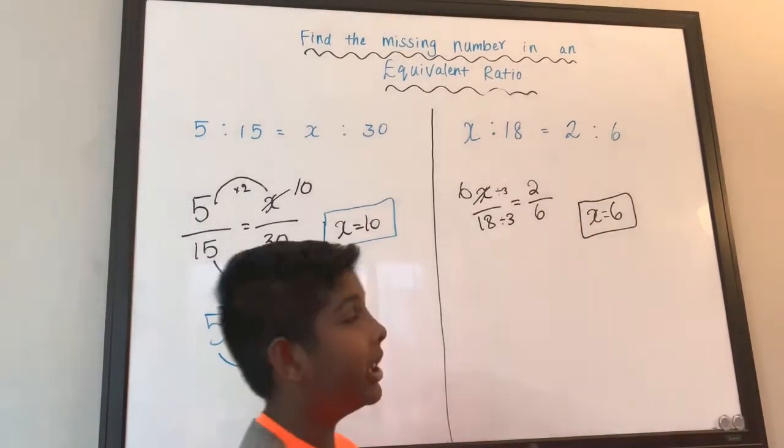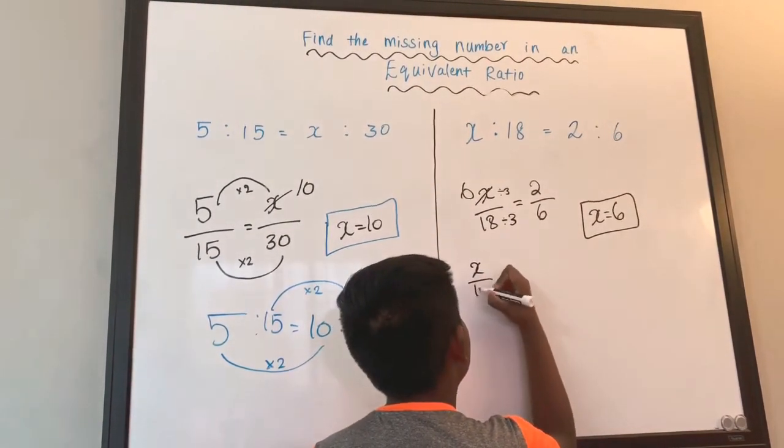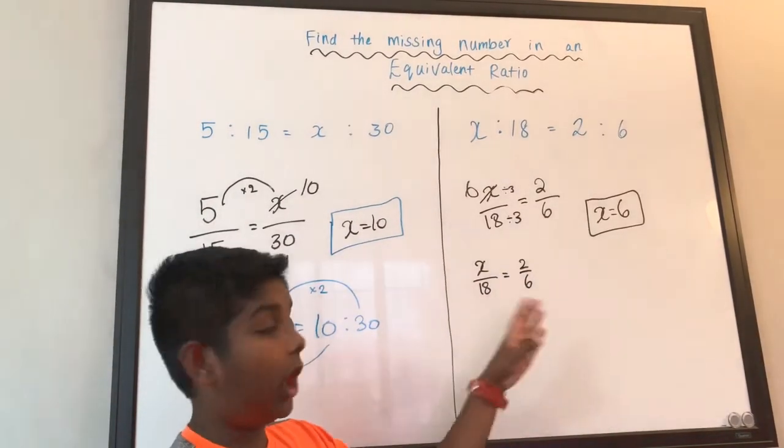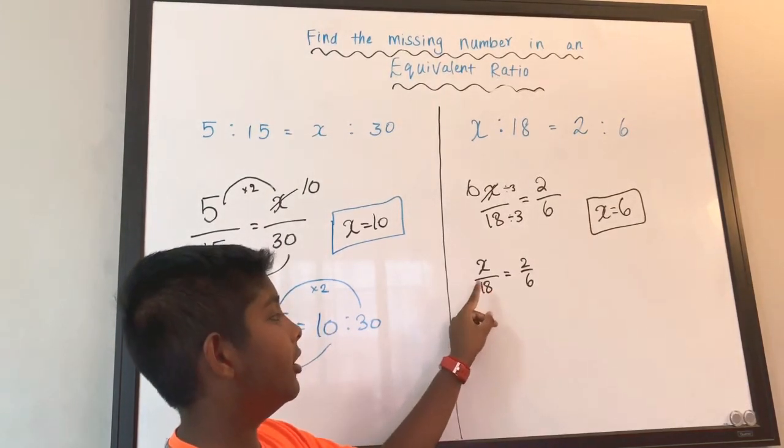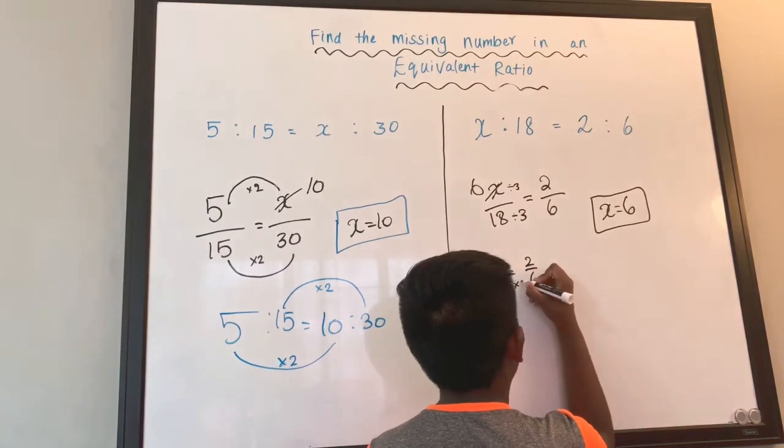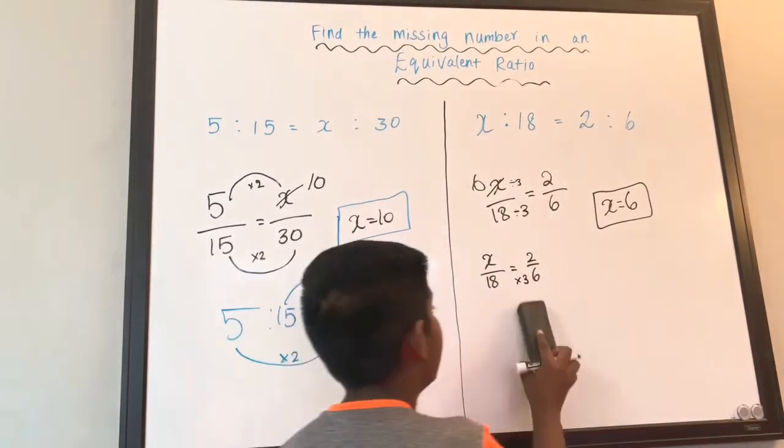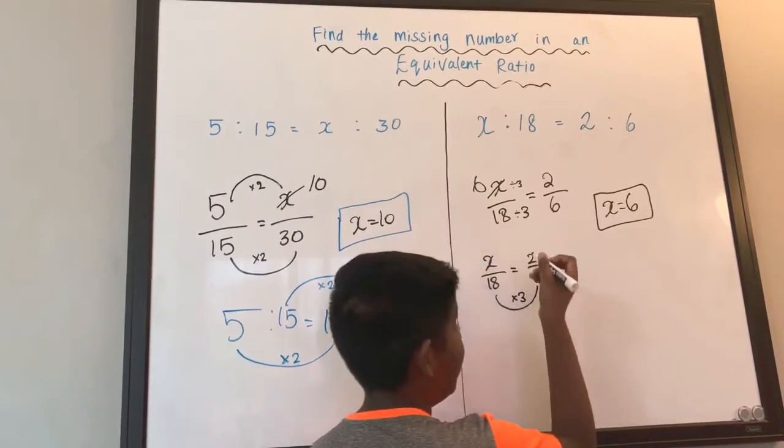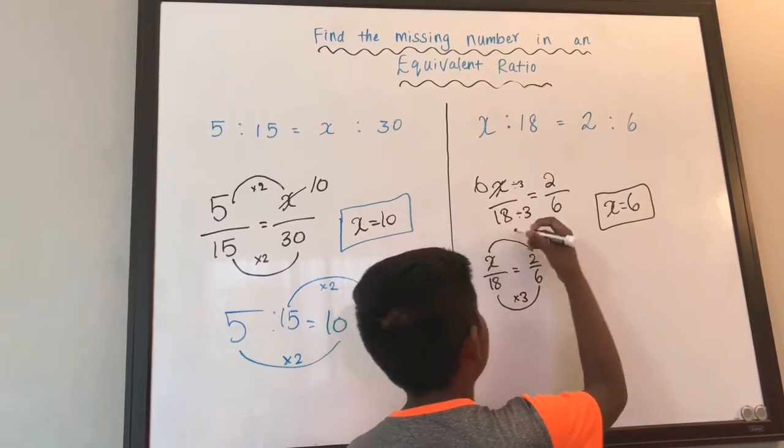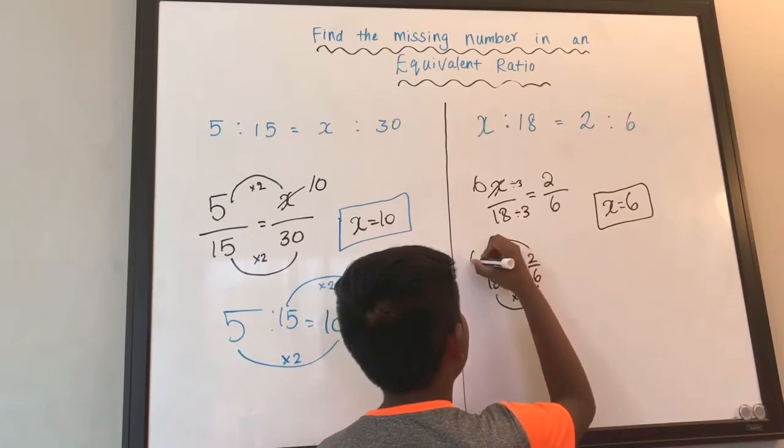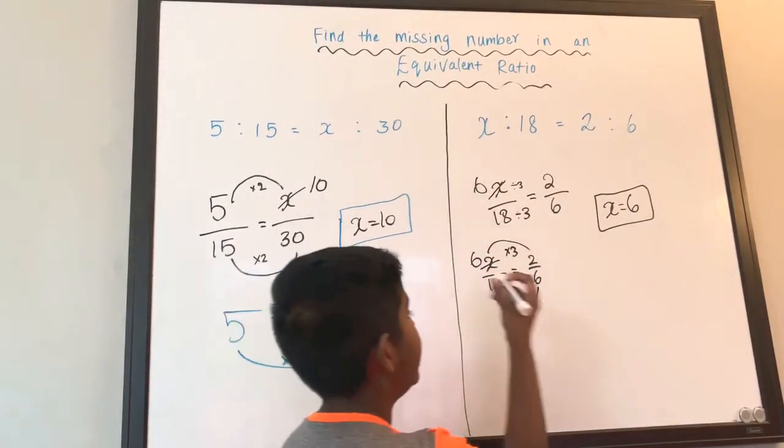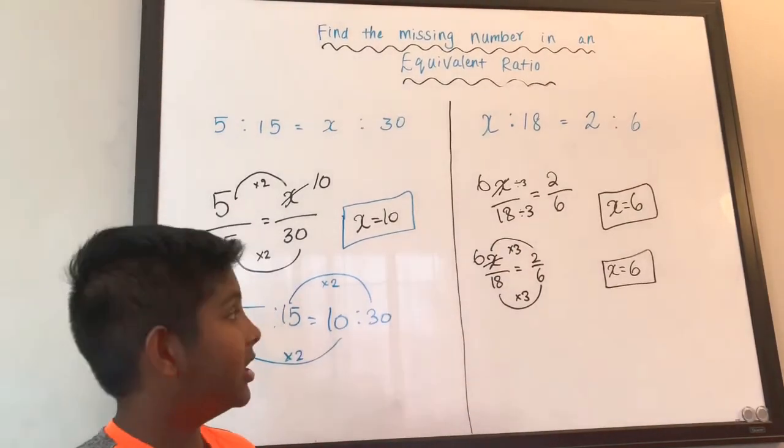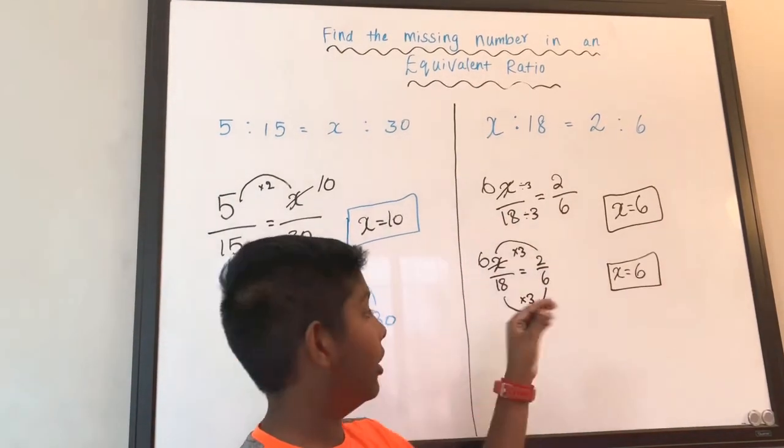Or otherwise we can do the opposite way. X over 18 equals to 2 over 6. So we can do the opposite way. 6 times what number is 18? 6 times 3. And we have to do the same thing to the top. So 2 times 3 equals to 6. We still get the same answer because our X value is 6. So we can do it any way like from left to right or right to left.